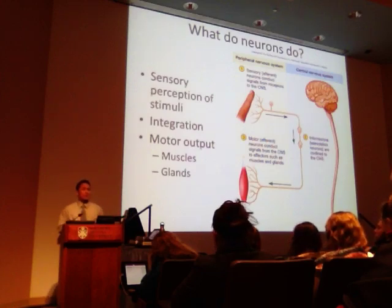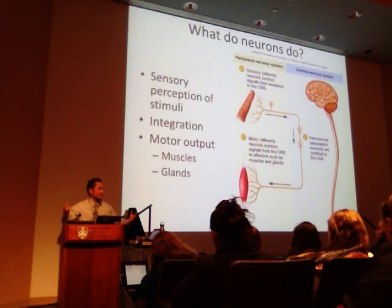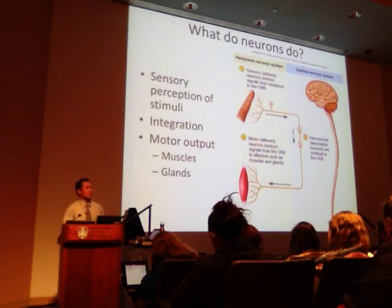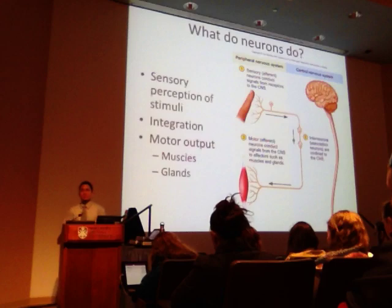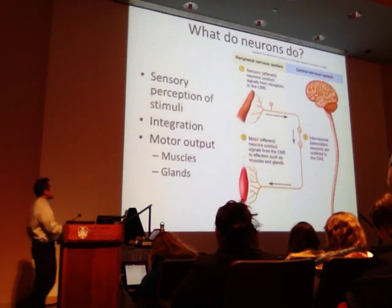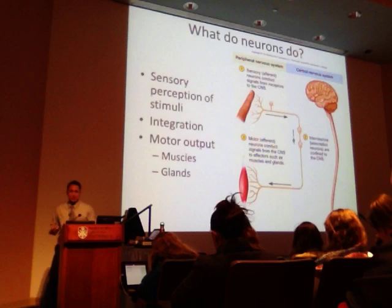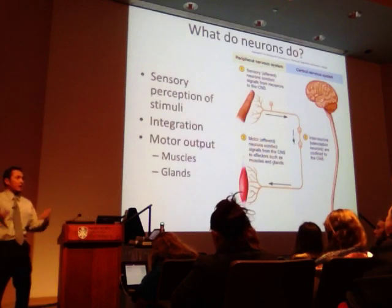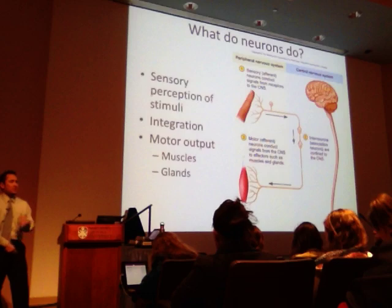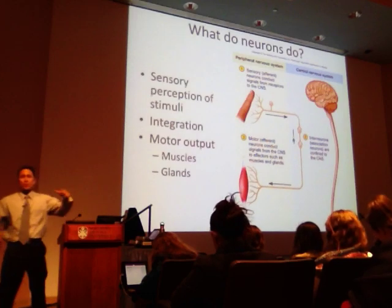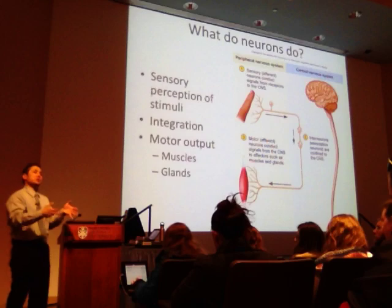For example, input might come in saying it's bright, or it's hot, or it's humid. We integrate all these signals via neurons. Then we have an output side — the nervous system doesn't just receive information. If a fire alarm went off, we would hear it, integrate it, decide we're supposed to exit, get up and do something about it. The nervous system interfaces sensory, integration, and output.